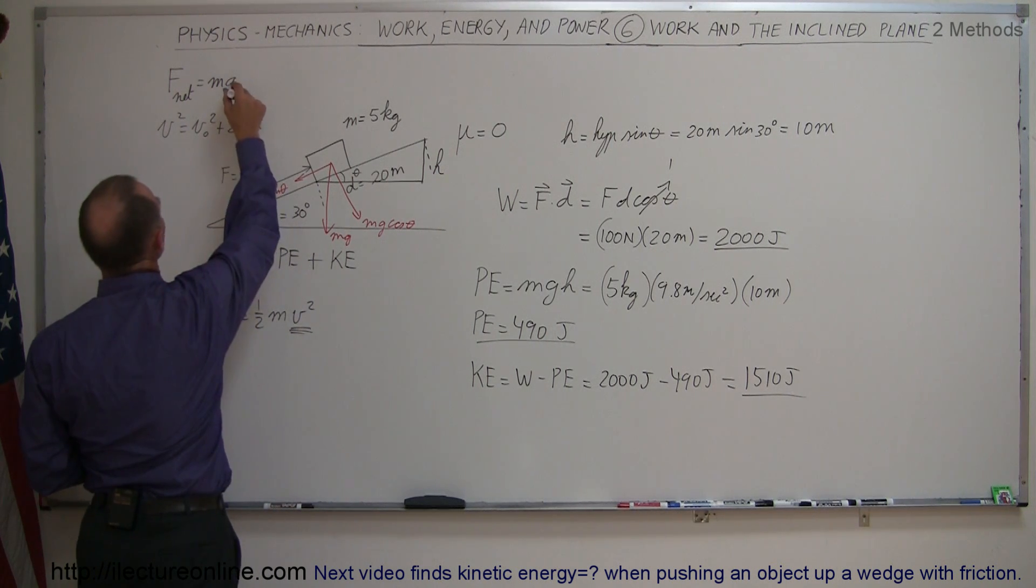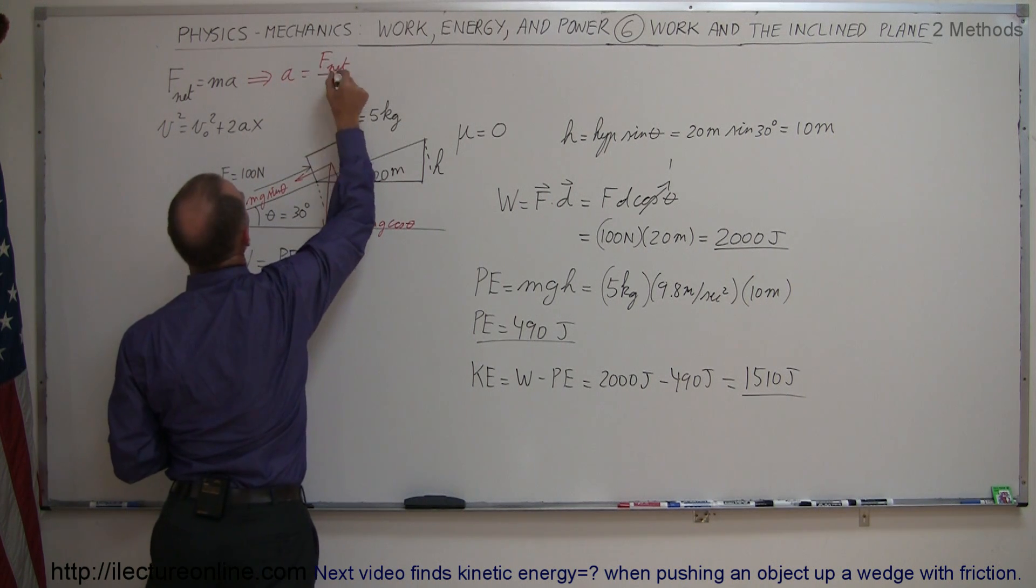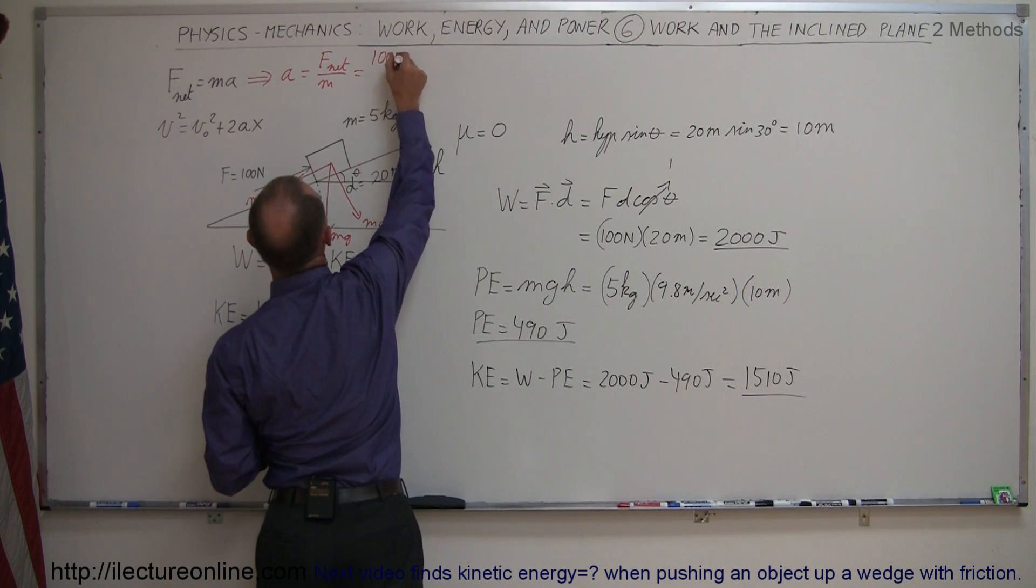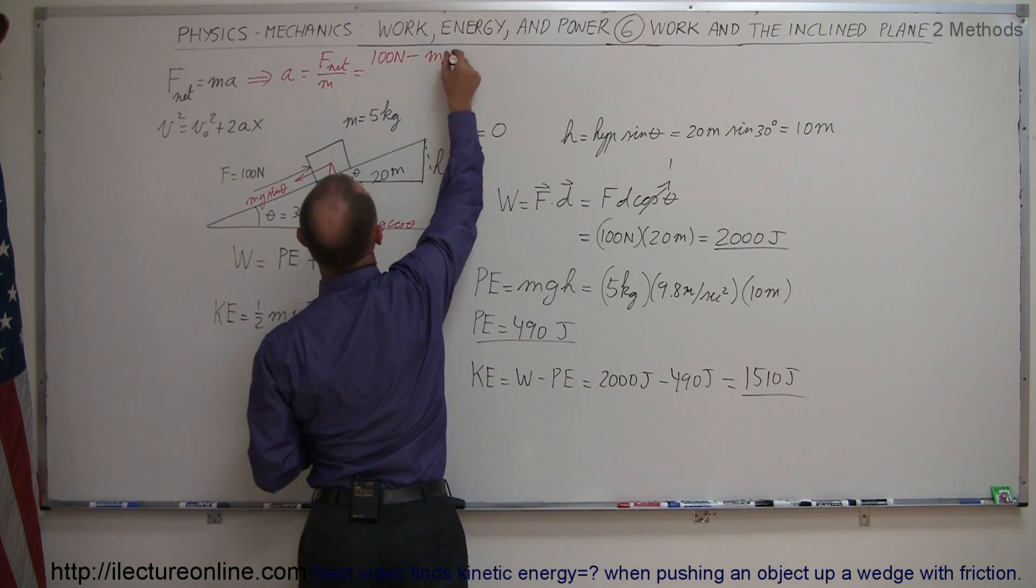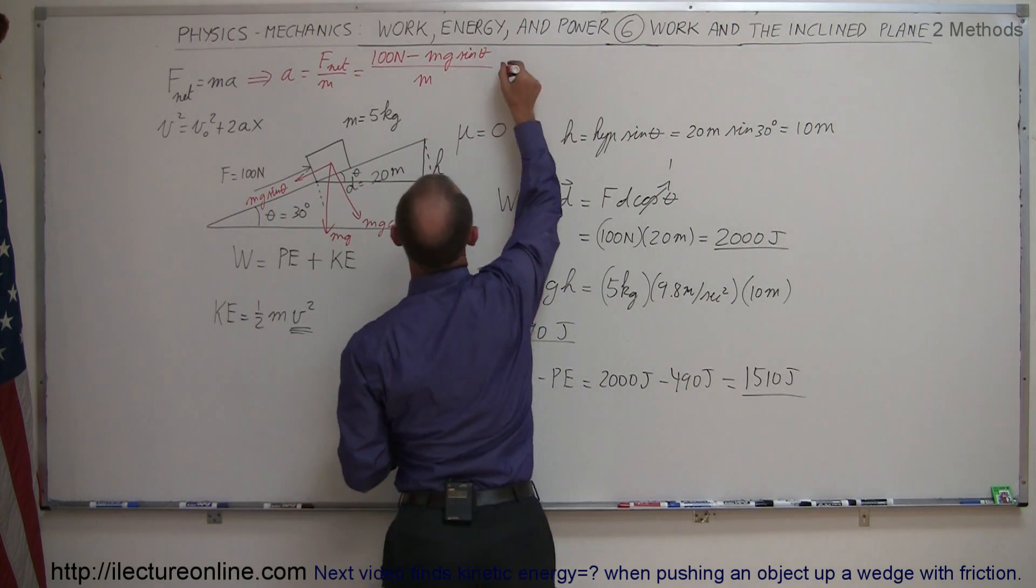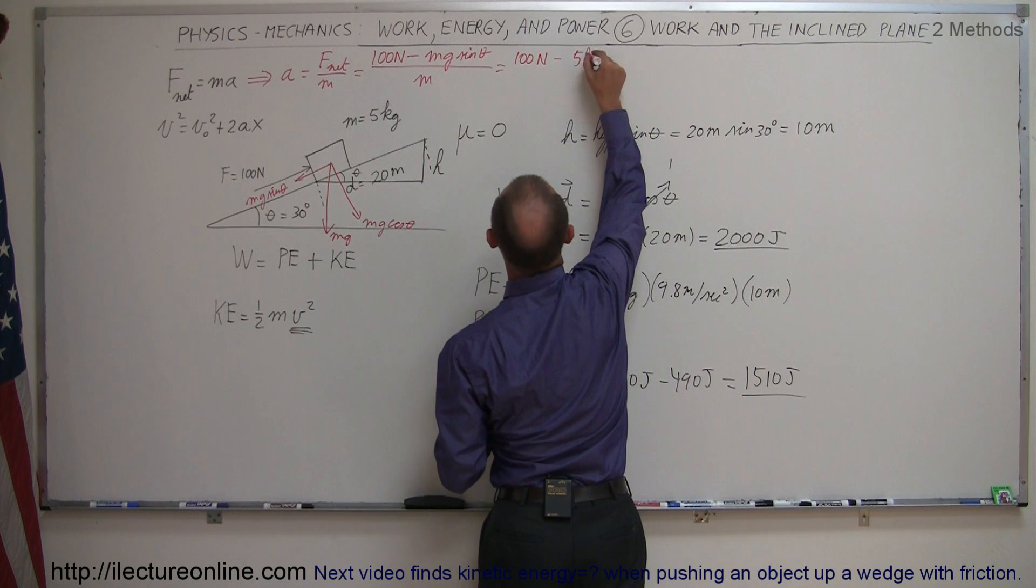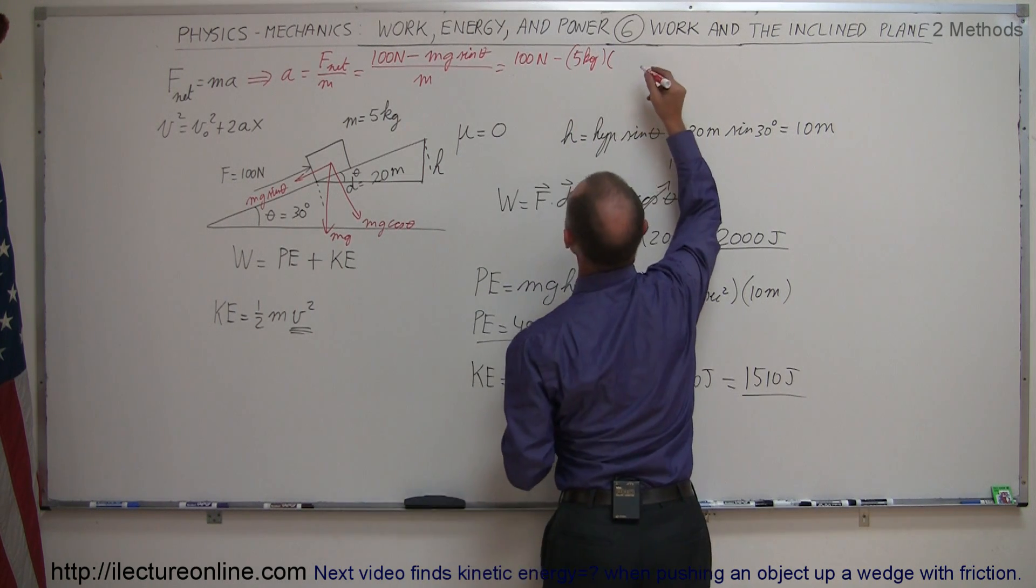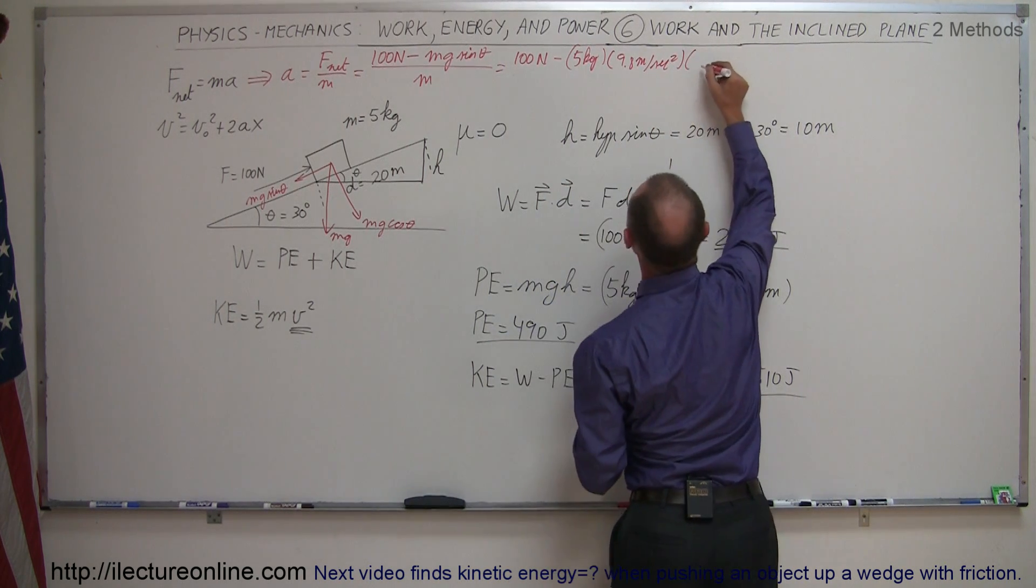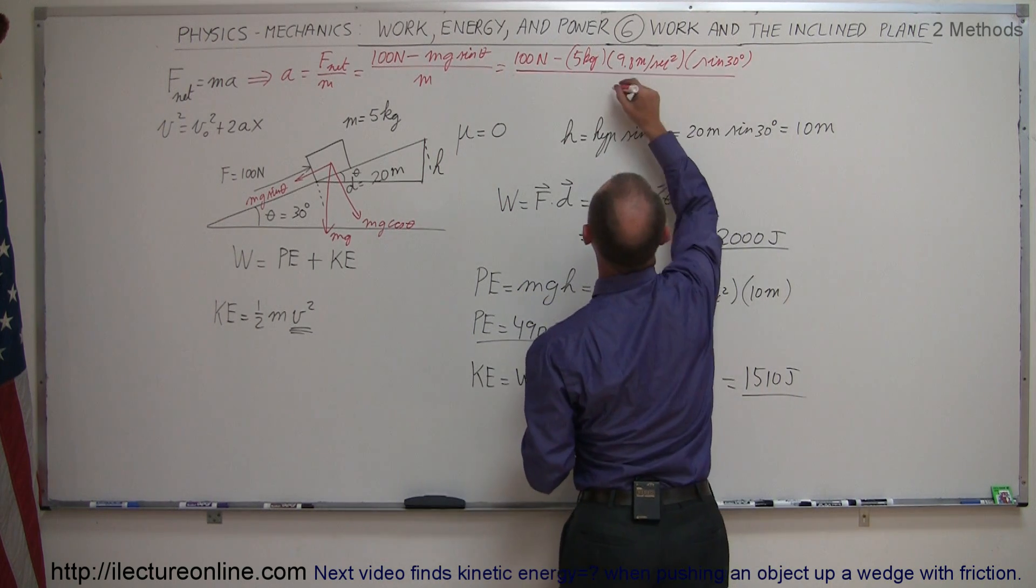So calculating the acceleration that way, we can say that the acceleration is equal to f net divided by the mass of the block. So f net will be the 100 newton force applied to the block minus the mg sine theta, all divided by the mass. And so this will be 100 newtons minus the mass, which is 5 kilograms, times g, which is 9.8 meters per second squared, times the sine of 30 degrees, which is one-half, and take the whole thing and divide it by 5 kilograms.